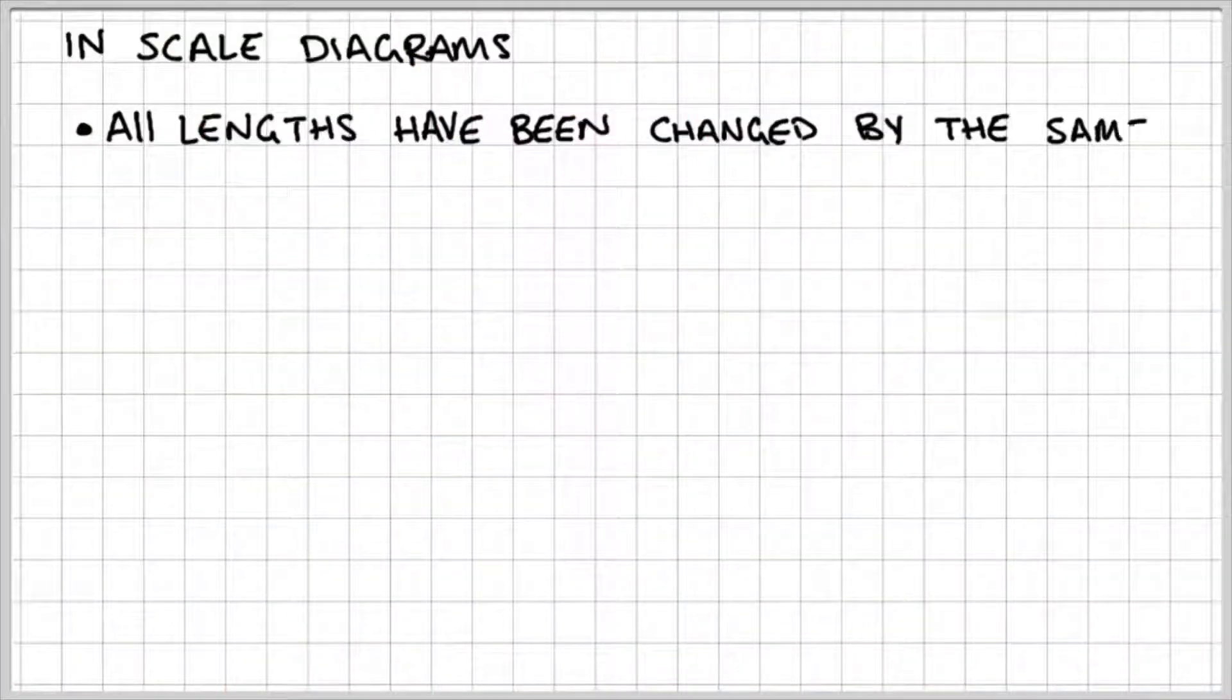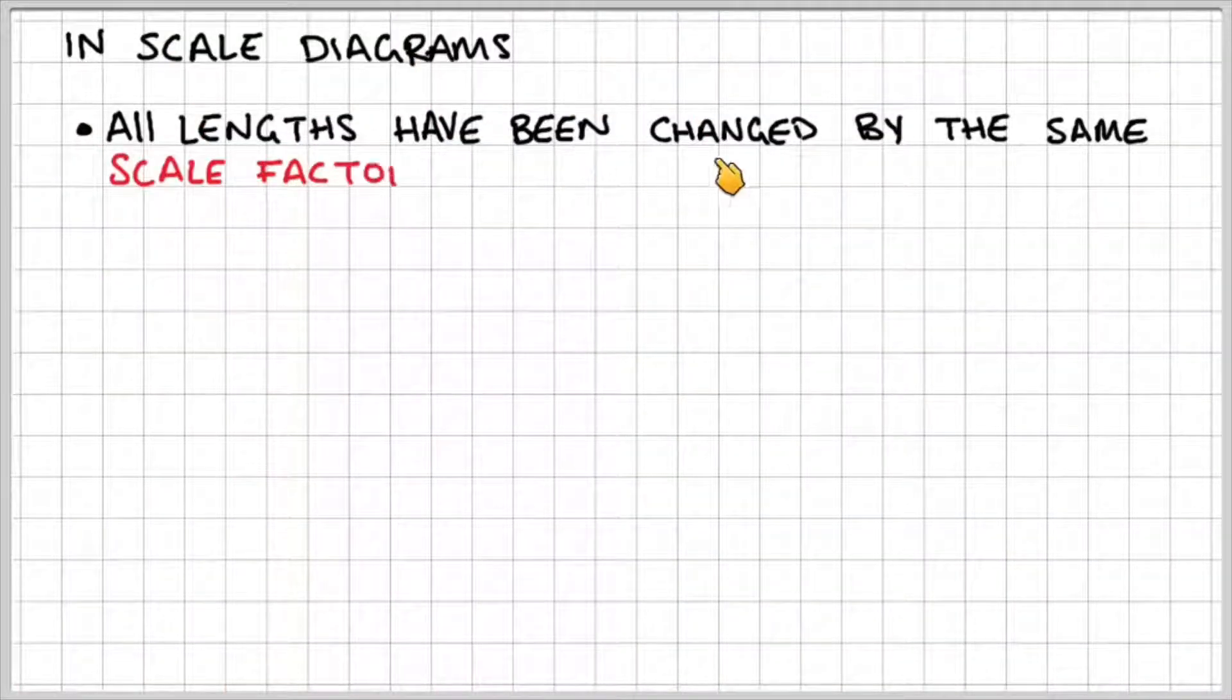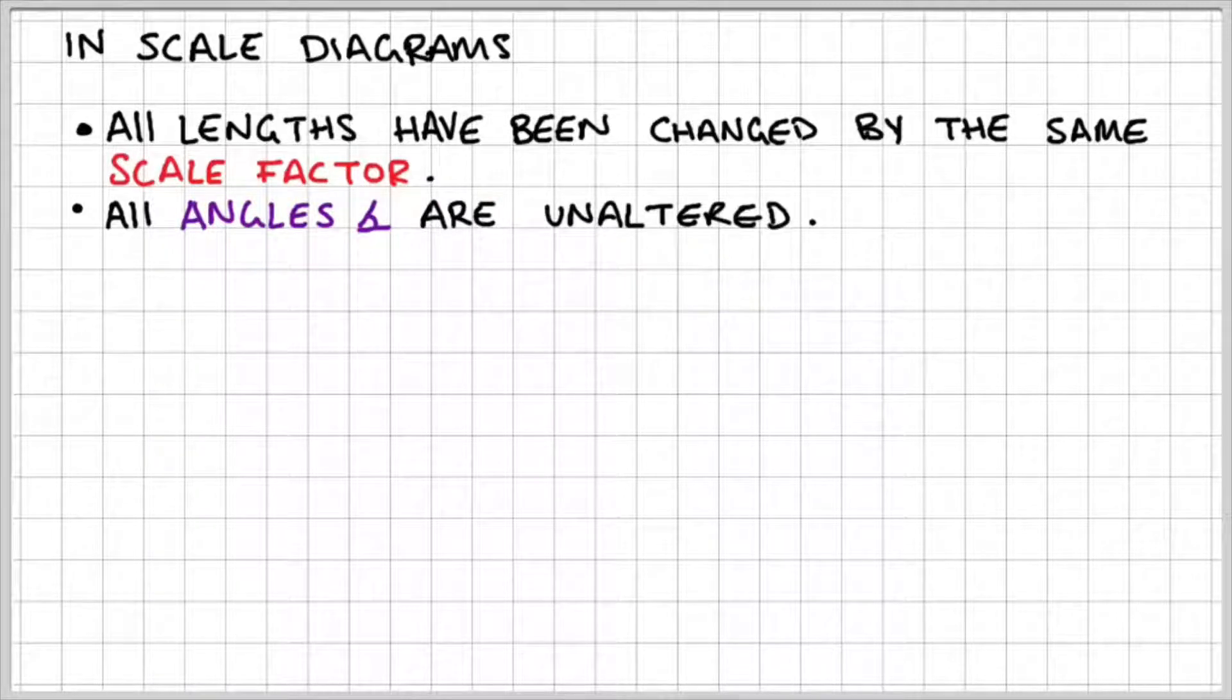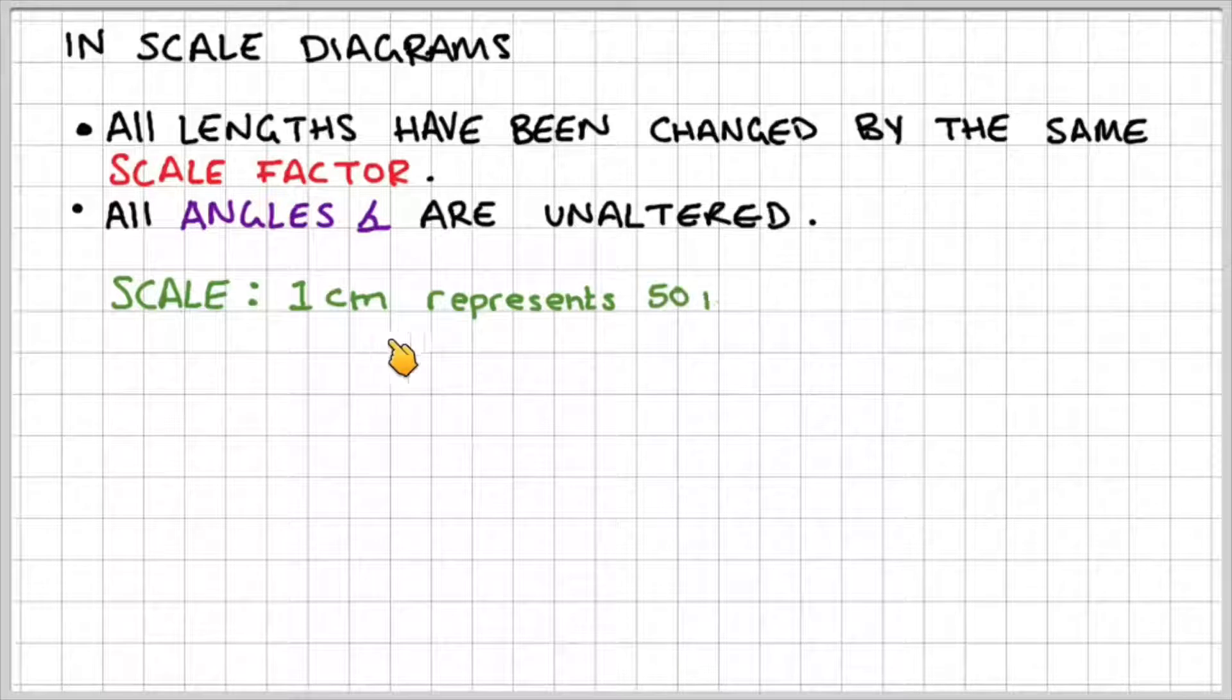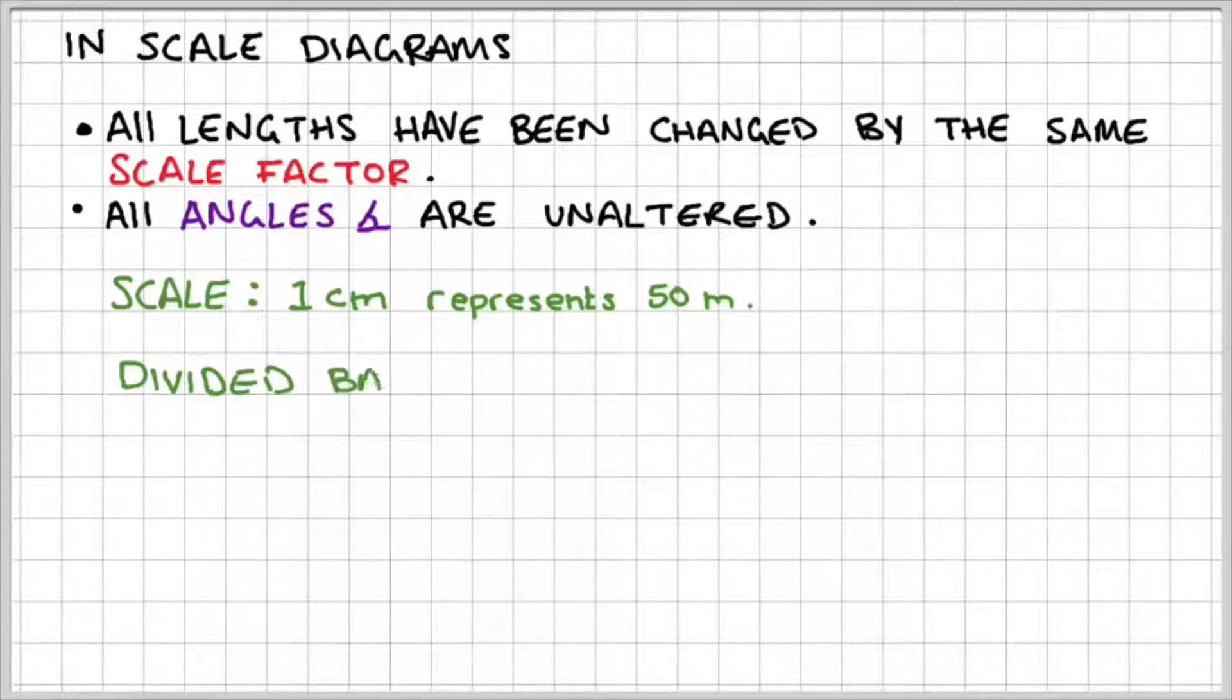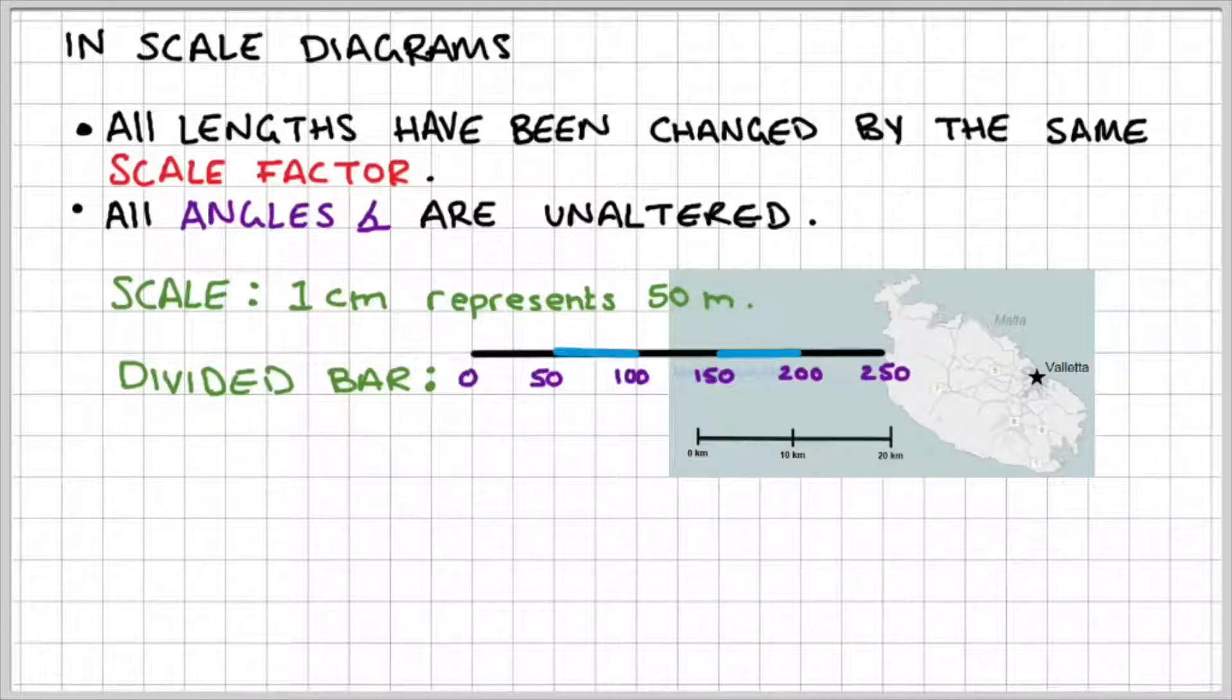So in scale diagrams all lengths have been changed by the same scale factor and all angles are unaltered. You may see an example of a scale that says one centimeter represents 50 meters. Now this means that one centimeter on a drawing represents 50 meters in real life. Another example could be a divided bar. So in this case one centimeter would represent 50 meters, two centimeters 100 meters and so on and so forth. This is commonly used in maps.